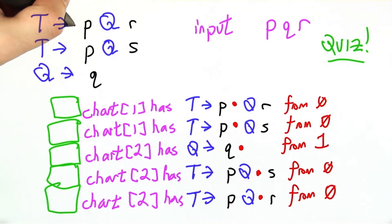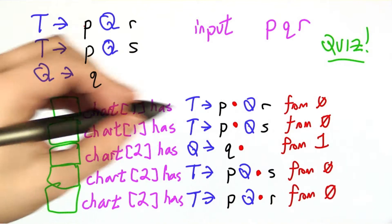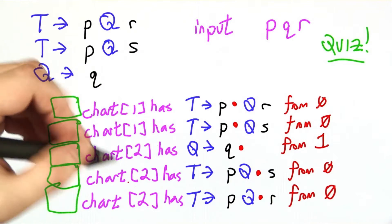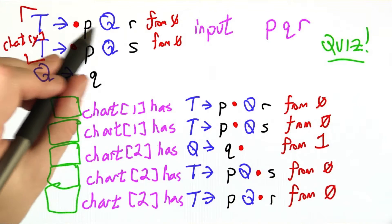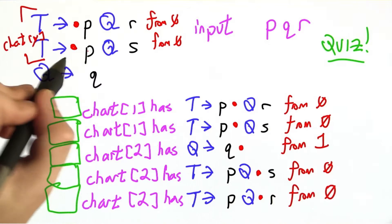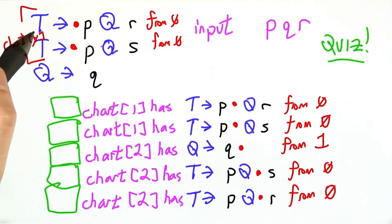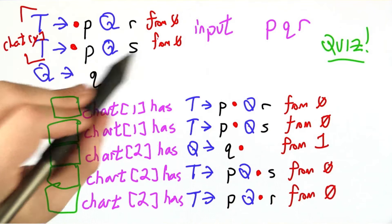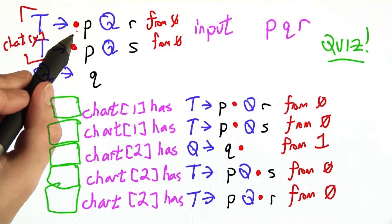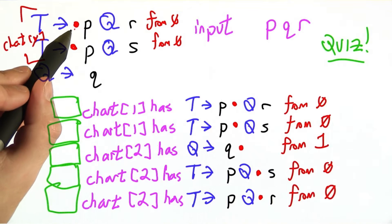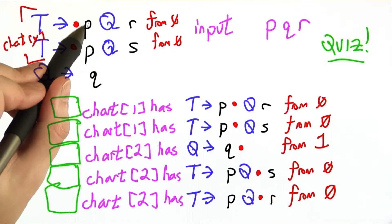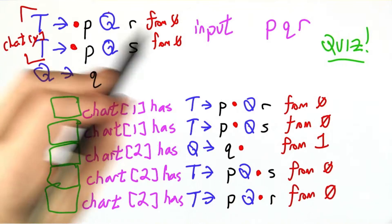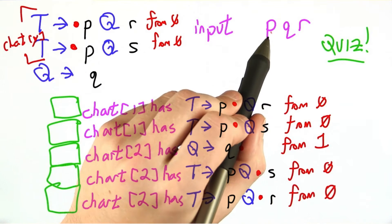If you'll permit me to doodle over our grammar, one way to get started is to think about what's in chart 0. These two are in chart 0: t goes to .bqr and t goes to .bqs, and we haven't seen anything yet. So if we start from that in chart 0, the only operation we can do is to shift to get to chart position 1 — shift over the input p, if that's actually the first character of the input.